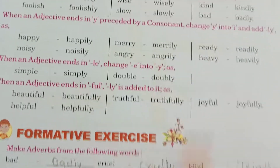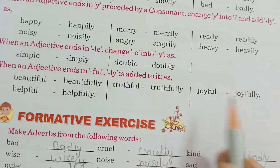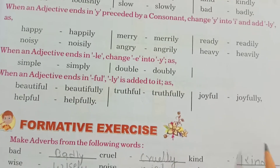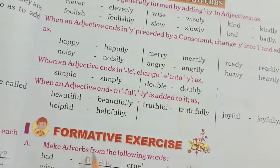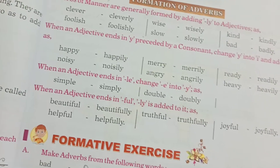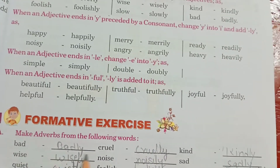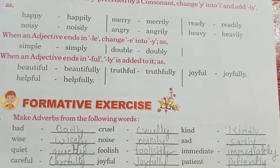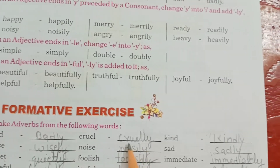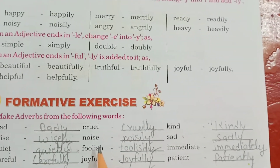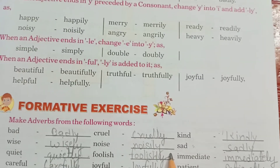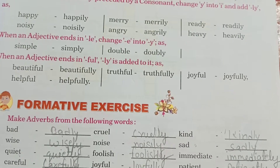Formation of adverb form — you have to put an -LY. Angry becomes angryly, joyfully. So you will find many more: like bad becomes badly, wise becomes wisely, quiet becomes quietly, careful, cruel, noisily, foolishly.